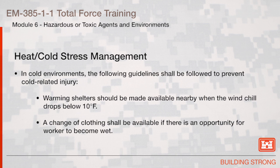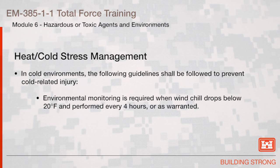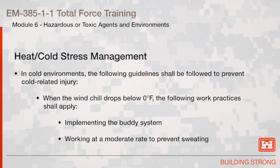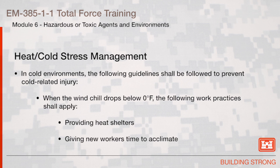In cold environments, the following guidelines shall be followed to prevent cold-related injury: warming shelters should be made available nearby when the wind chill drops below 10 degrees Fahrenheit; a change of clothing shall be available if there is an opportunity for a worker to become wet; environmental monitoring is required when the wind chill drops below 20 degrees Fahrenheit and performed every 4 hours or as warranted. When the wind chill drops below 0 degrees Fahrenheit, the following work practices shall apply: implementing the buddy system, working at a moderate rate to prevent sweating, providing heat shelters, and giving new workers time to acclimate.